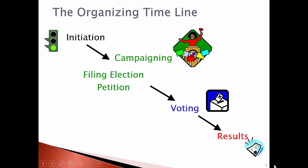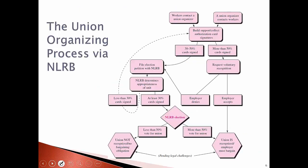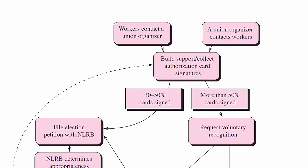So how does organizing work? There's an initiation process, campaigning and filing an election petition, voting, and then the results. The union organizing process is how non-union workers are able to get a union to represent them in their workplace. The initiation of the process could begin by calling a recognition strike, but usually workers contact a union organizer. It is also possible that a union organizer could contact the workers in an attempt to get them interested in a union.